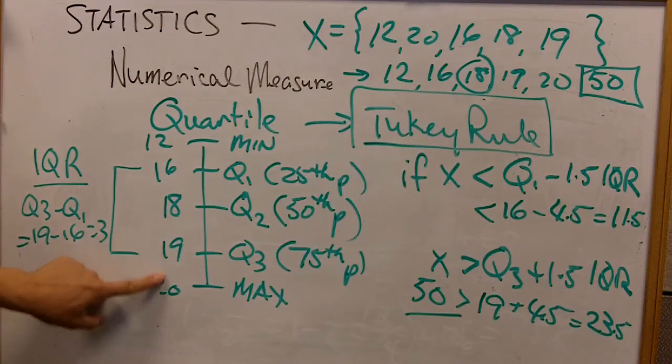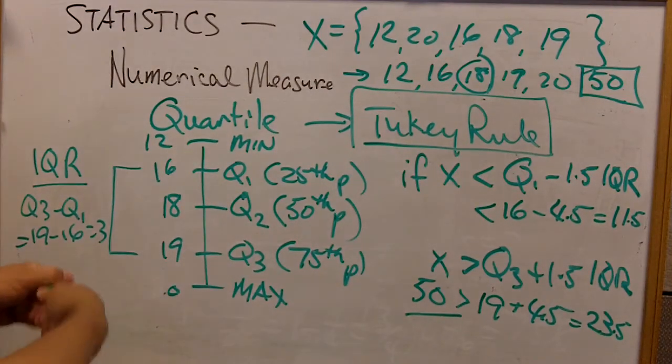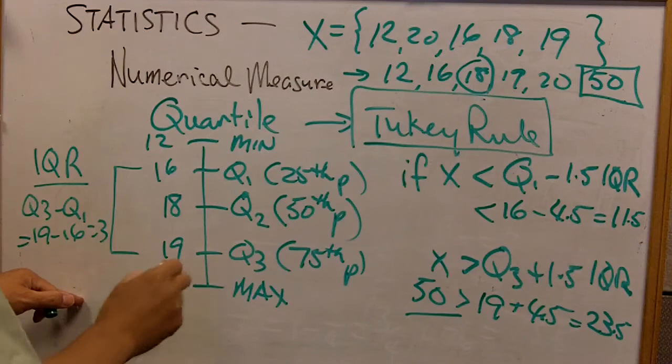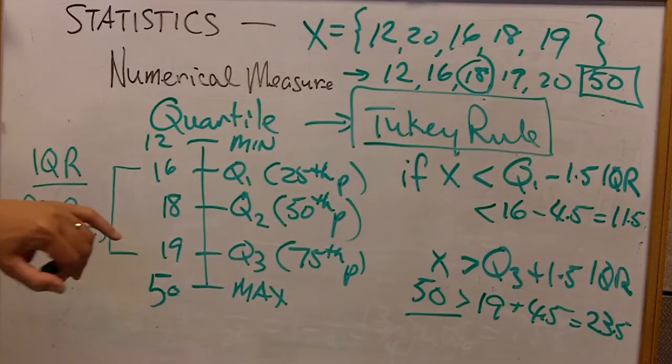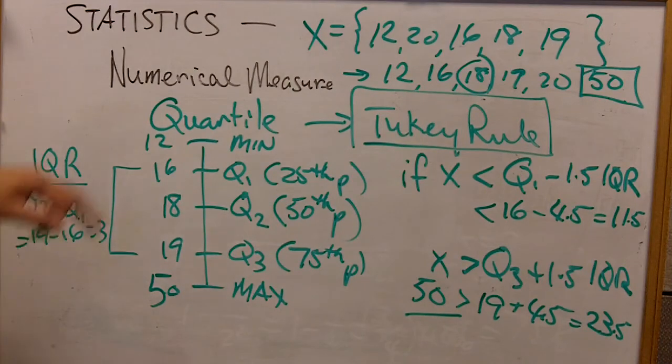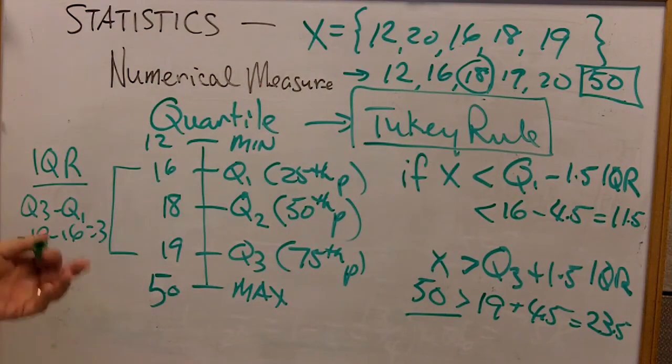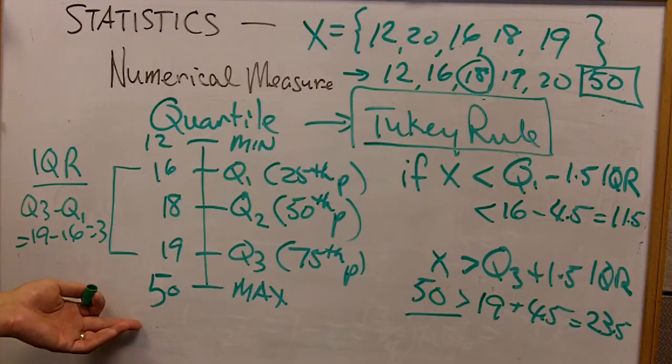So even if this value turned out to be 50 in our example, we would have the same Q1 and Q3. We'll have the same IQR. And as such, using the Tukey rule, we'll still conclude that the 50 is an outlier.